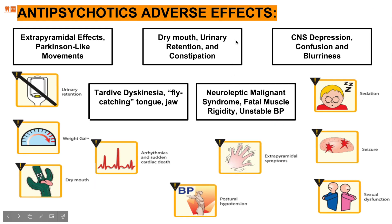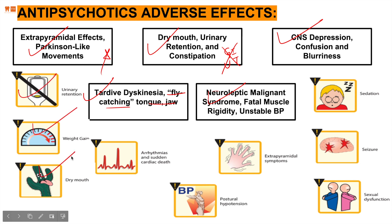Adverse effects include: extrapyramidal effects; dry mouth, urinary retention, and constipation due to GI and urinary tract blockade; CNS depression, confusion, and blurred vision; tardive dyskinesia — described as fly-catching tongue and jaw movements; and neuroleptic malignant syndrome, a fatal condition involving muscle rigidity and unstable blood pressure. Additional adverse effects are urinary retention, weight gain, arrhythmia, sudden cardiac death, postural hypotension, sedation, seizures, and sexual dysfunction.